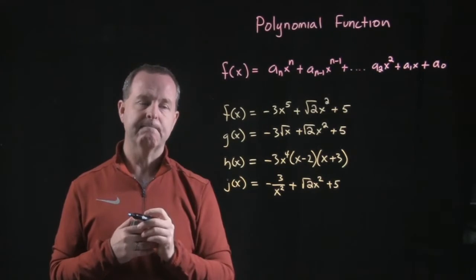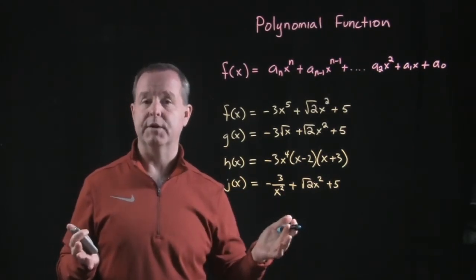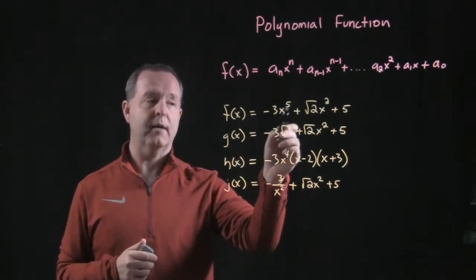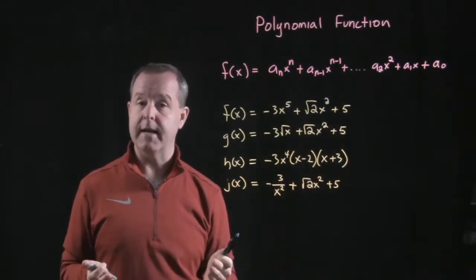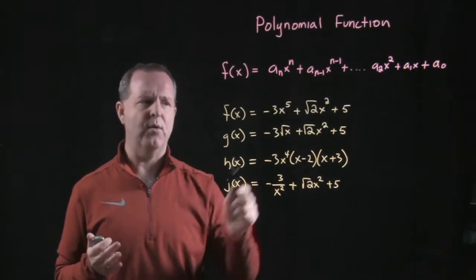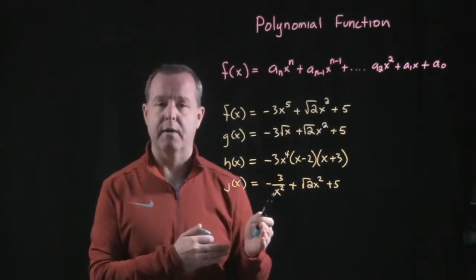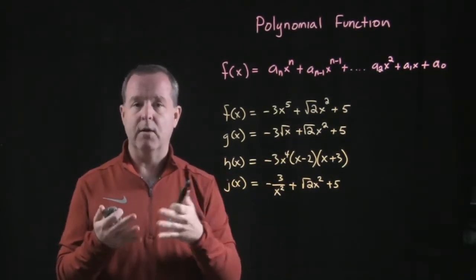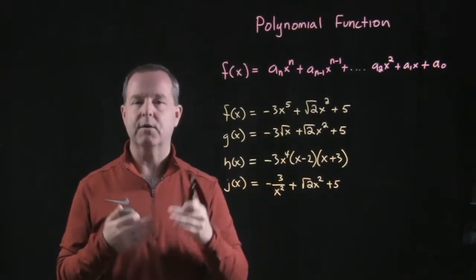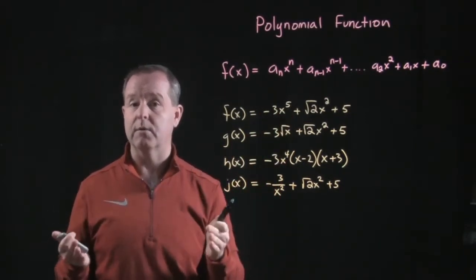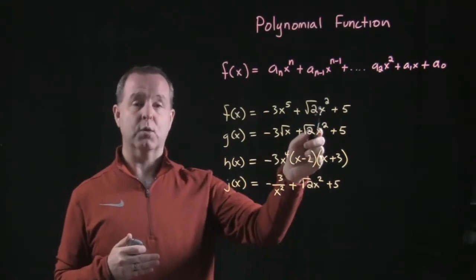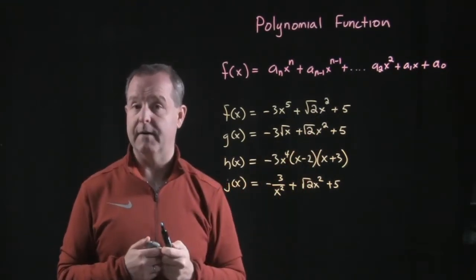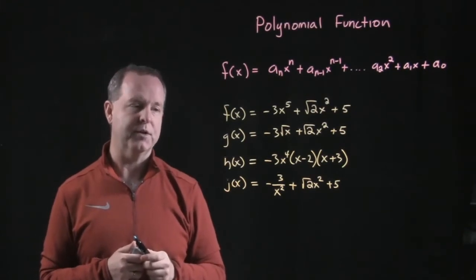First one, f of x, it is a polynomial function. All of the x terms are cascading down. I have x to the fifth, x squared, and both of those are non-negatives. It doesn't matter that I don't have an x to the fourth or x to the third. Those terms are just omitted. Or maybe in this case, the coefficients of those terms were zeros. So, the only ones I'm left with is an x to the fifth term, x to the squared term, and some constant of five. So, f of x is a polynomial function.